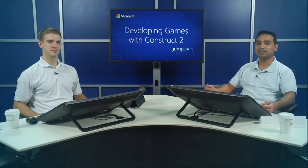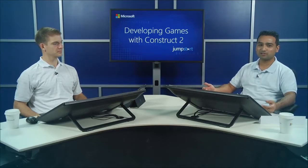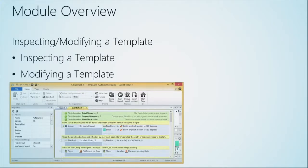As you've seen earlier, Construct 2 comes with a lot of different templates. When you start the software, you can click on File New and start off with a new project. Every time you start a new project, you'll be able to select an existing template or start creating something from scratch. A good way to modify them is to reverse engineer the different parts already in there, and maybe add new things to the game.